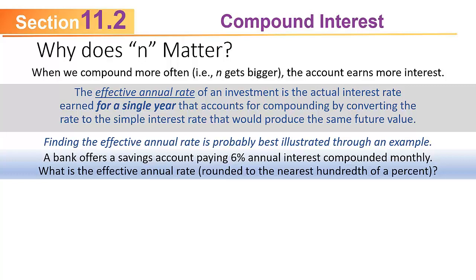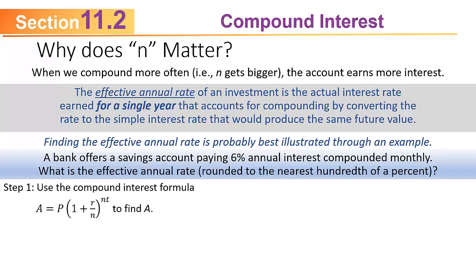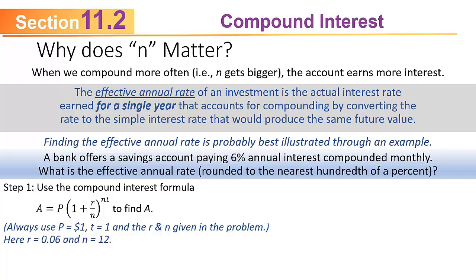A bank offers a savings account paying 6% annual interest compounded monthly. What is the effective annual rate, rounded to the nearest hundredth of a percent? First, use the compound interest formula to find what $1 invested for one year would grow to — the actual amount doesn't matter, the rate comes out the same. With P = 1, r = 0.06, n = 12, t = 1: n × t = 12. Dividing 0.06 by 12 gives 0.005; adding 1 gives 1.005.